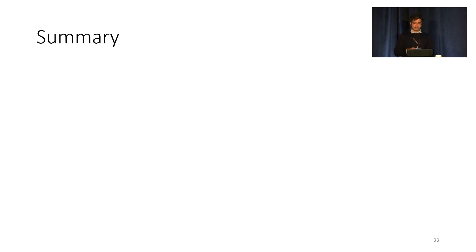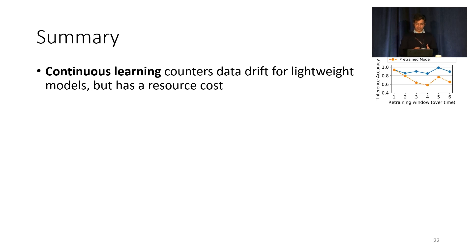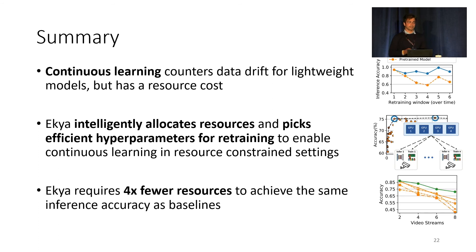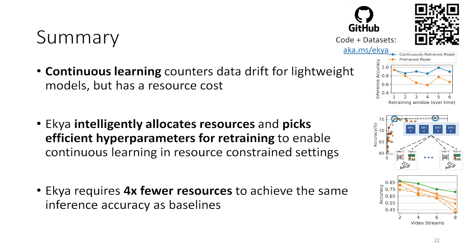To summarize: continuous learning is an effective method of countering data drift, but it has an associated resource cost. IKEA intelligently allocates resources between training and inference to maximize mean inference accuracy. IKEA requires 4x fewer resources to achieve the same inference accuracy as other baselines. We open source our code and release the datasets on GitHub, and I encourage you to try it out.